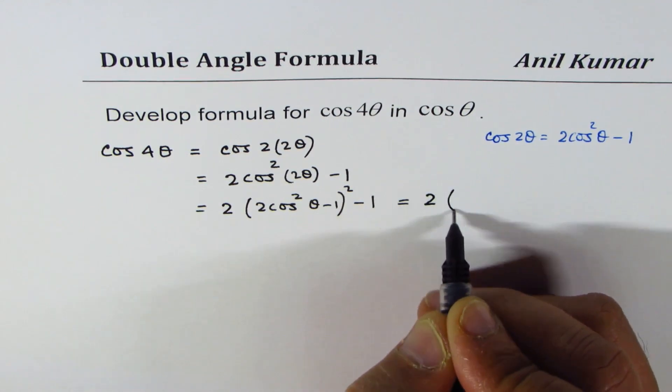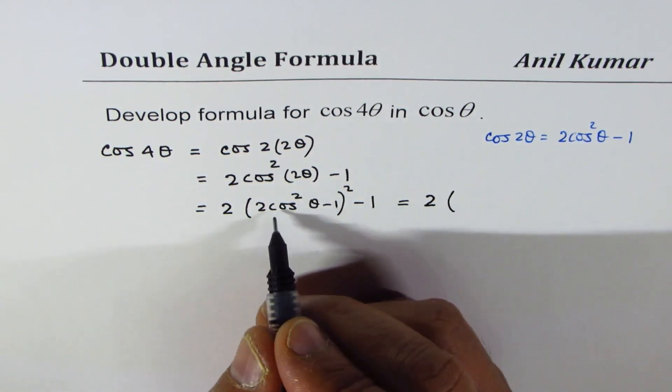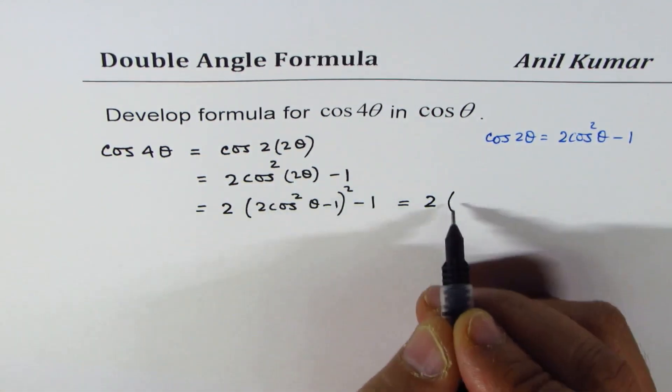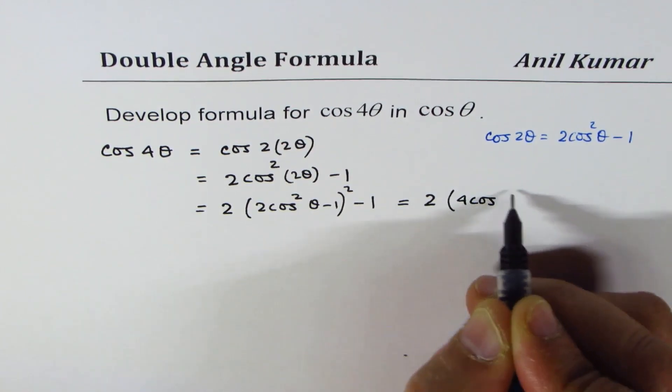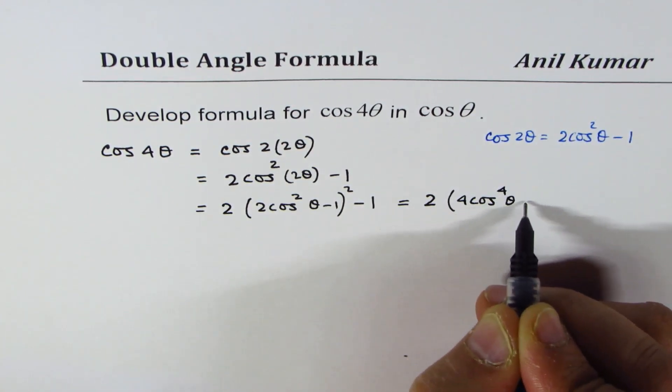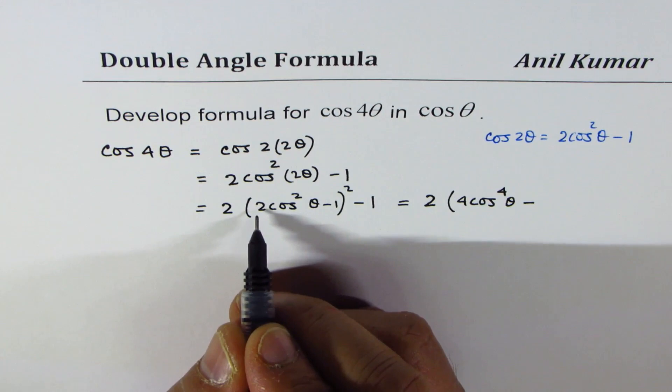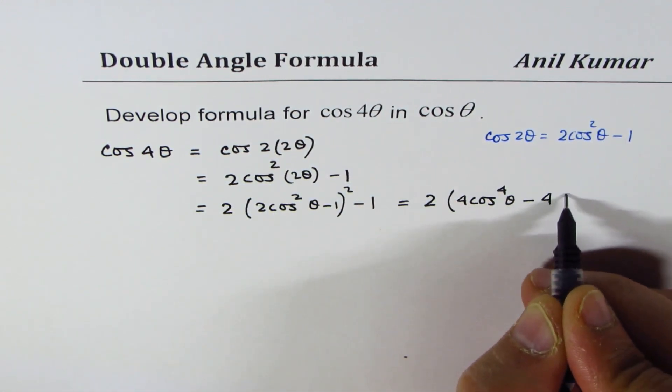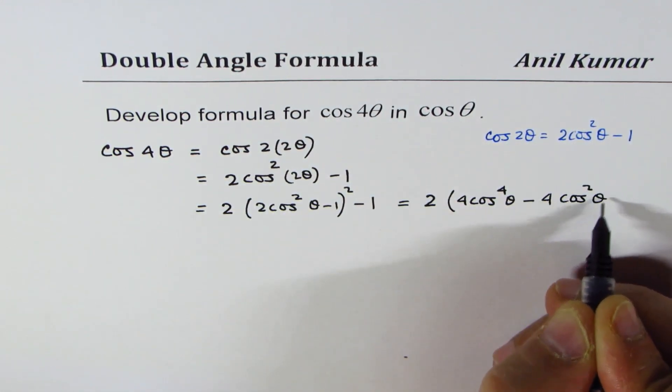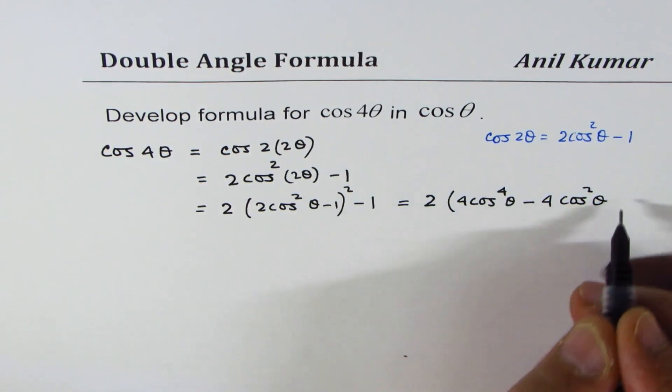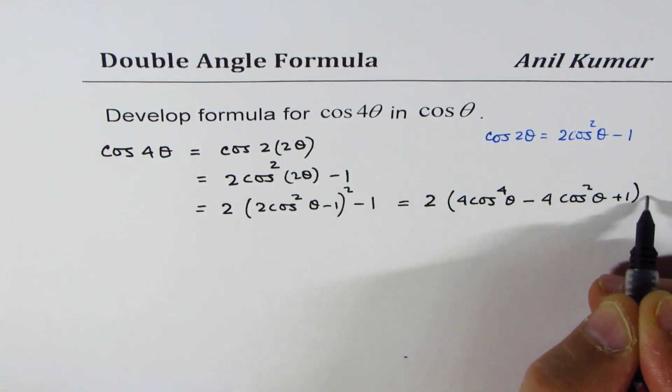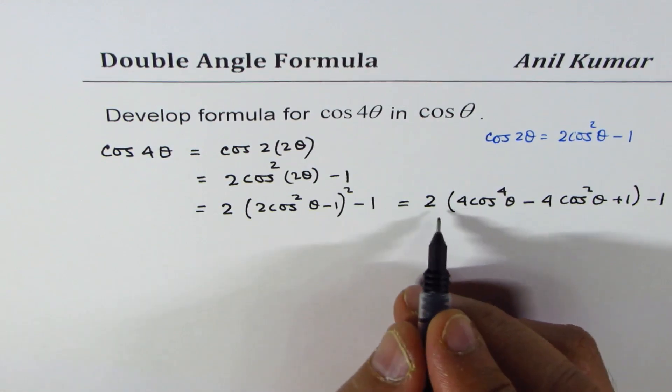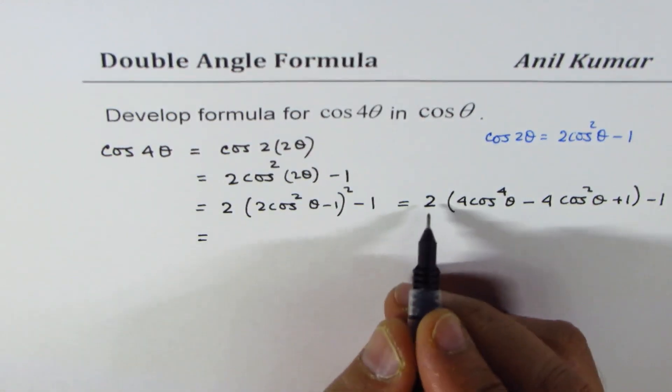So if I expand, I get 2 times, expanding this is the square of this term which is 4 cos⁴θ minus twice this which is 4 cos²θ plus 1 squared minus 1.